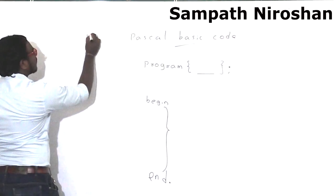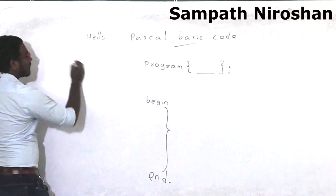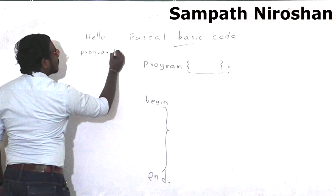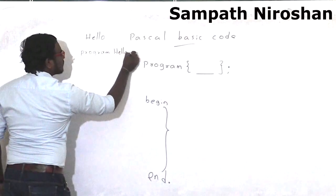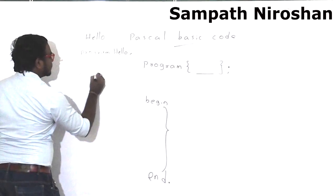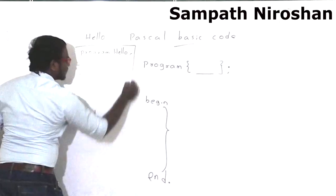Let's take an example. I am making a program like 'hello'. How to code it? You are like: program hello semicolon, and then begin, and end. Here's my first code.